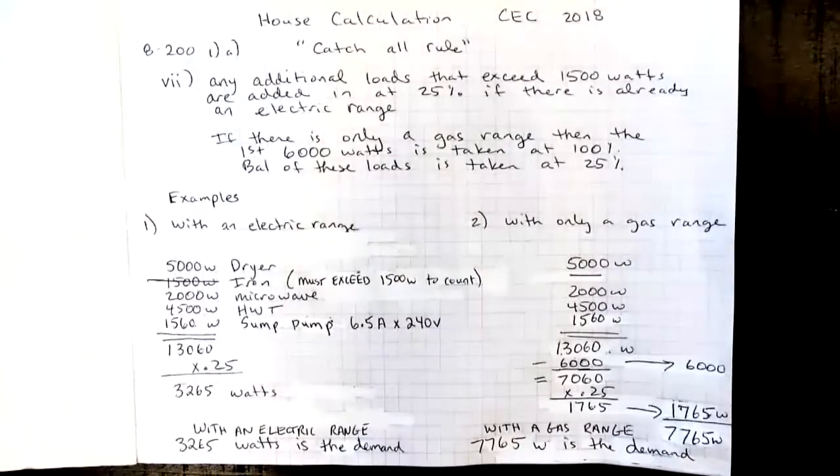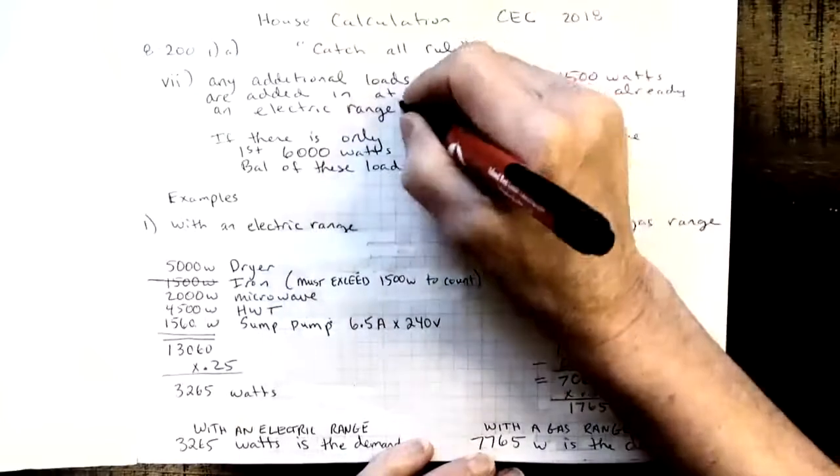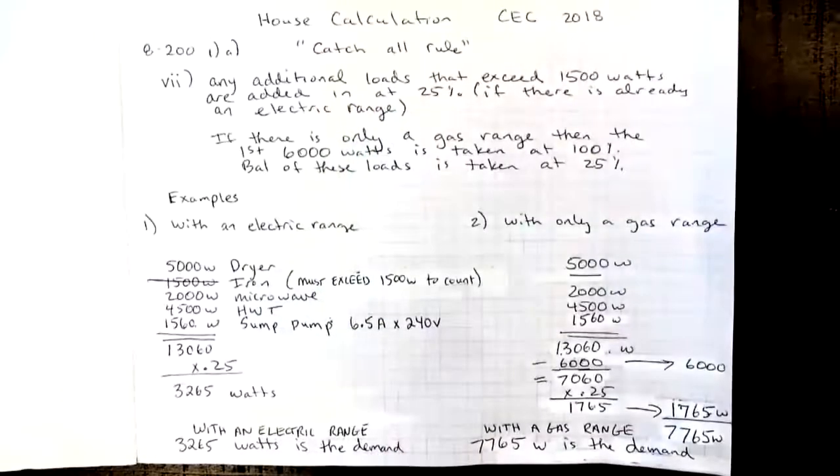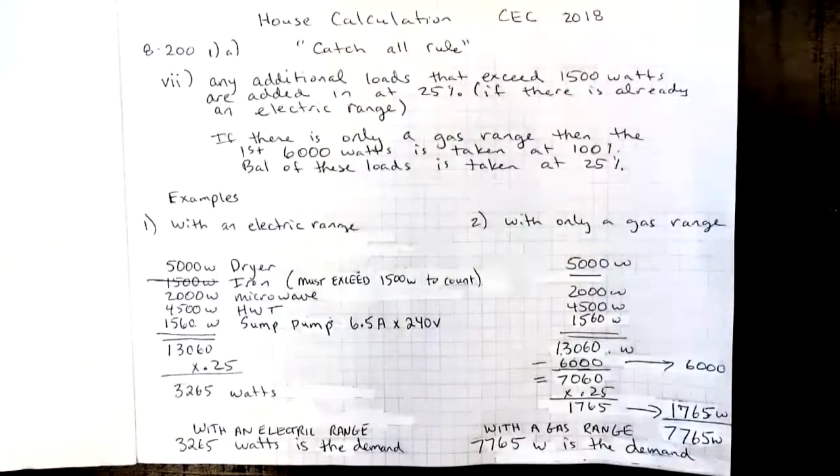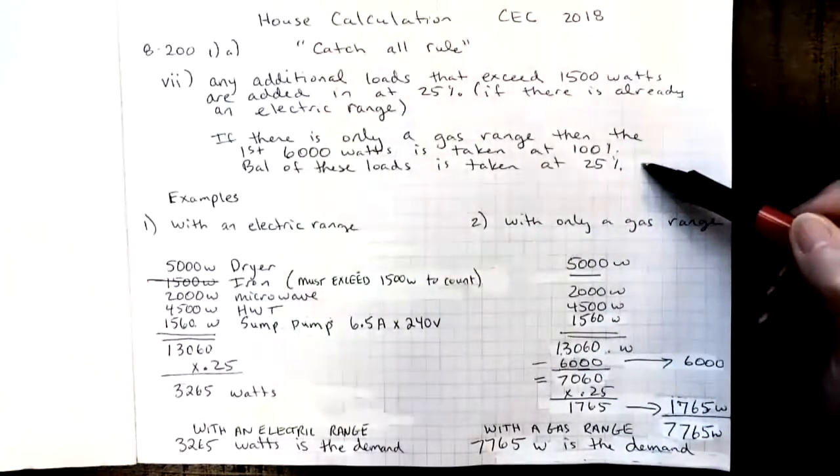Item 7 says any additional loads that exceed 1500 watts are added in at 25%. Now this is if there's already an electric range. If there's only a gas range, then we take these loads, add them up, and the first 6000 watts is taken at 100%, and the balance of these loads is then taken at 25%.